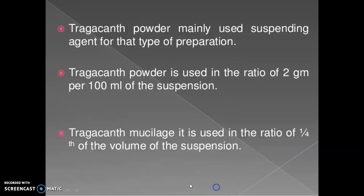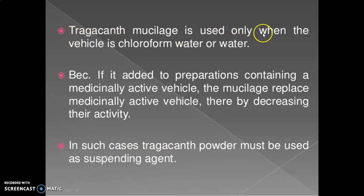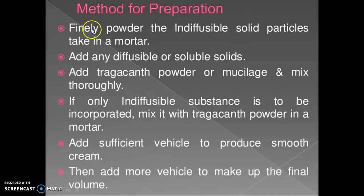The mainly used suspending agent for this type of preparation is Trabacan powder, used in the ratio of 2 grams per 100 ml of suspension. Trabacan mucilage is used in the ratio of one-fourth of the volume of the suspension. Trabacan mucilage is used only when the vehicle is chloroform water or plain water, because if added to preparations containing a medicinally active vehicle, the mucilage replaces the medicinally active vehicle, thereby decreasing its activity. In such cases, Trabacan powder must be used as the suspending agent.